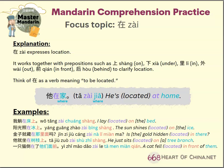Think of 在 as a verb meaning 'to be located.' In the example 他在家, this means he is located at home, or simply, he's at home.